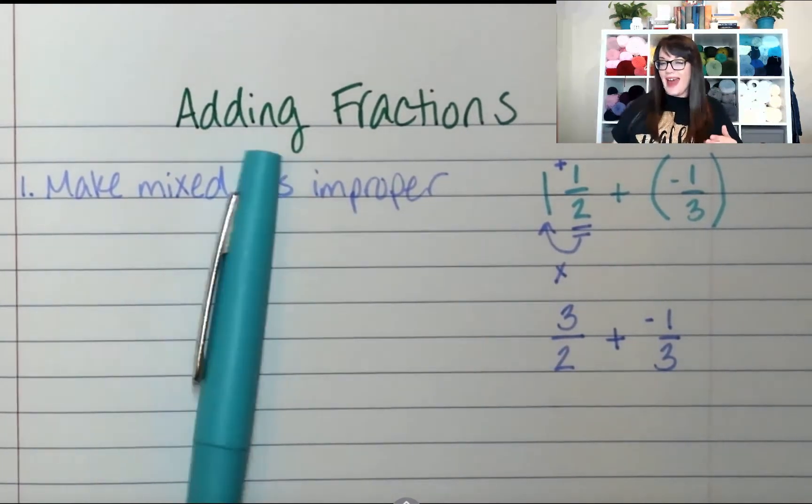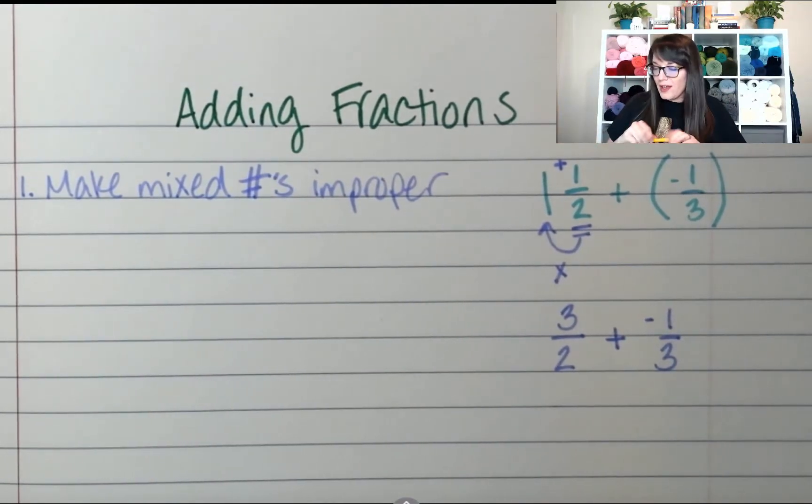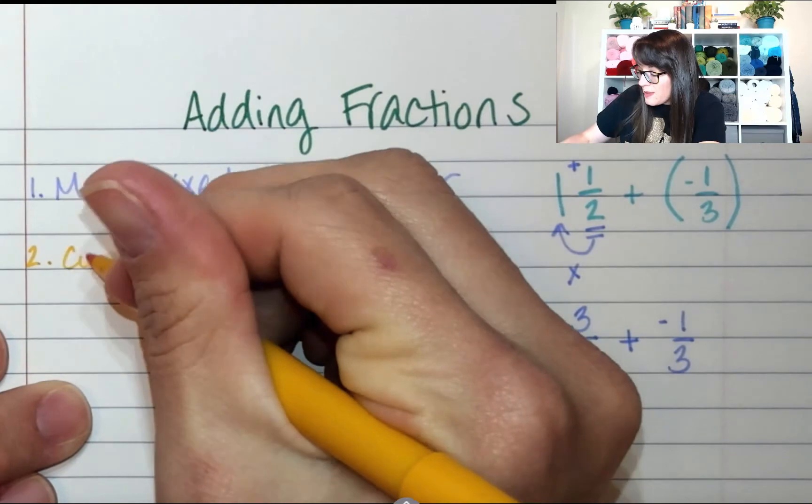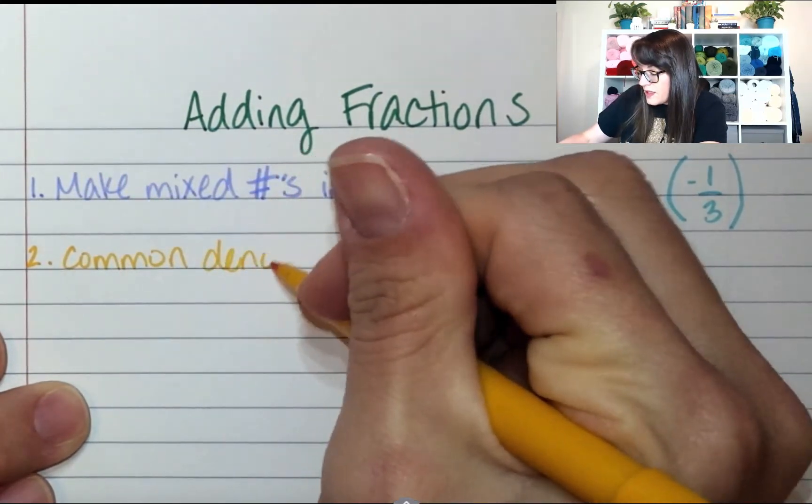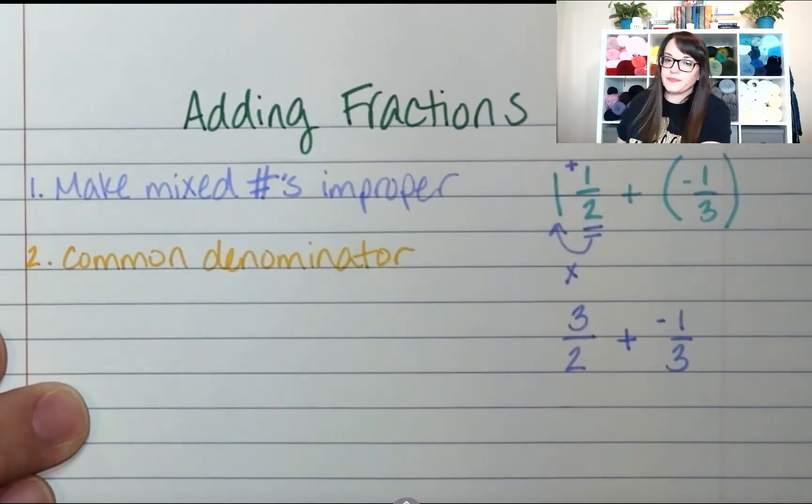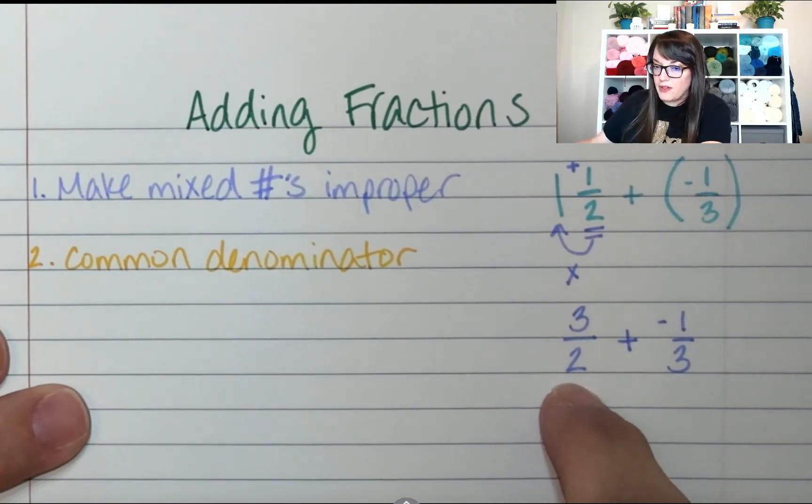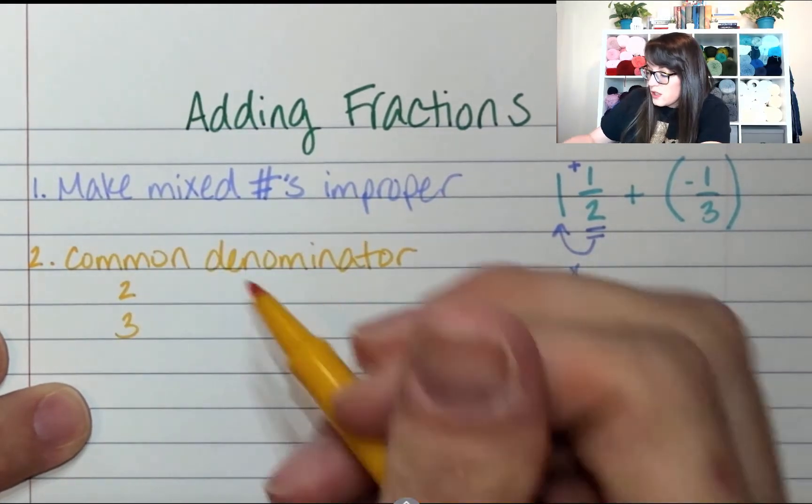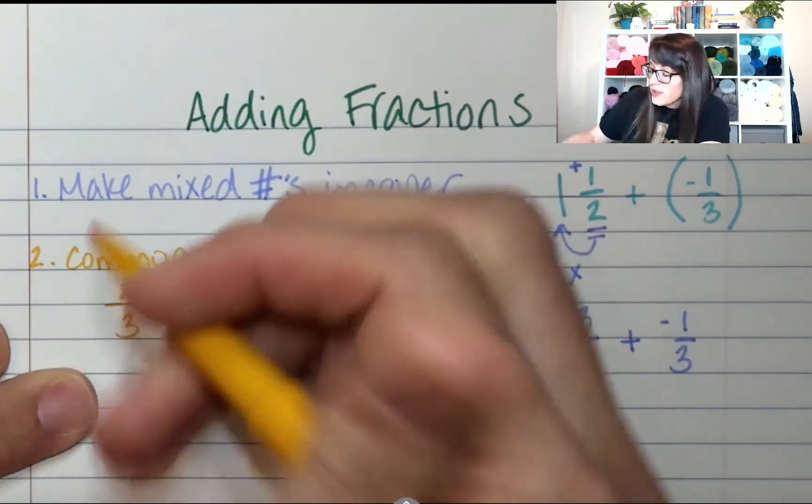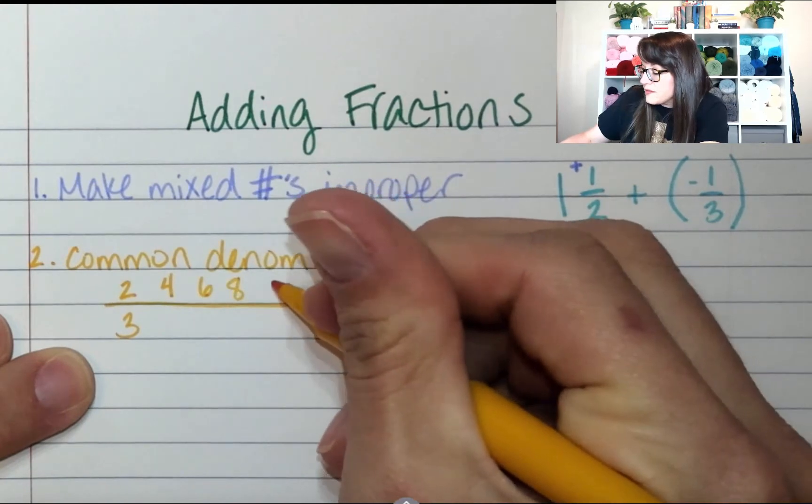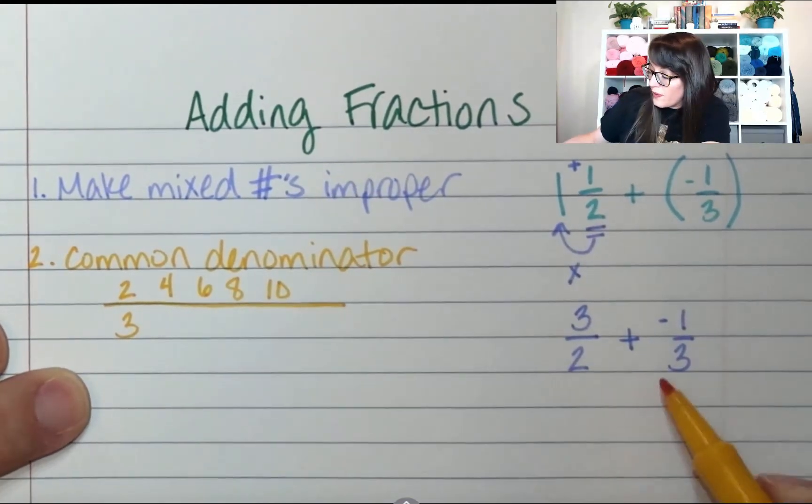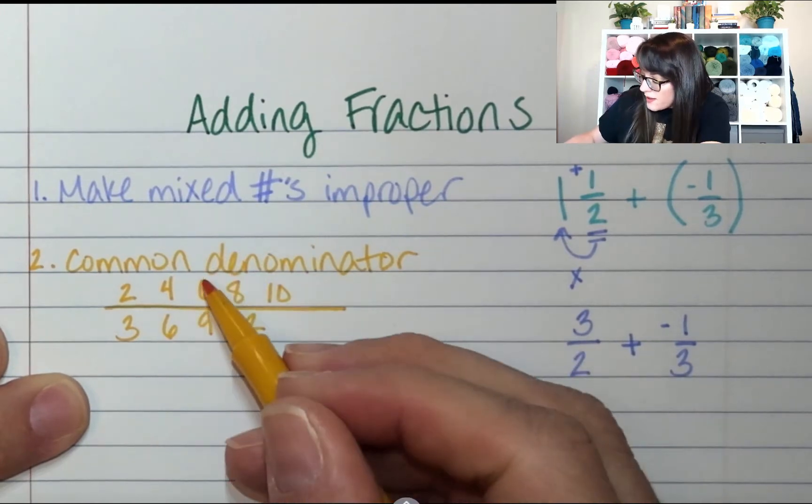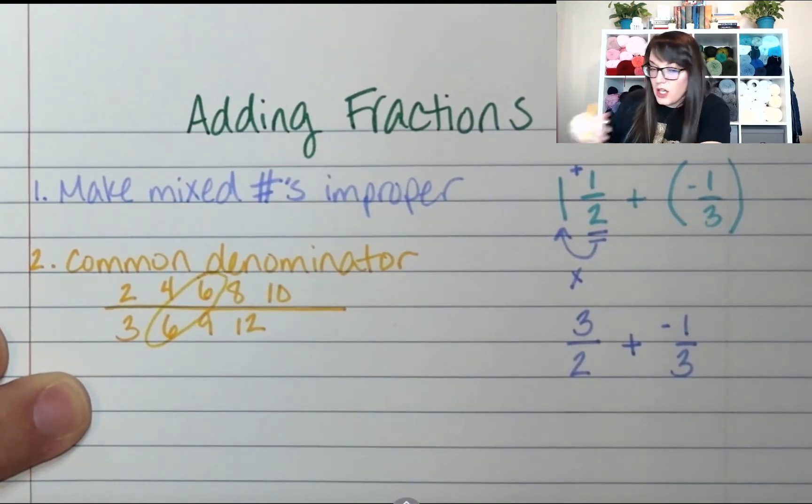The next rule, when we're adding fractions, you have to have a common denominator. So, my next step is I'm going to find a common denominator. An easy way to do that is to count by the denominators. So, if I count it by twos, and I count it by threes. Two, four, six, eight, ten, and so on. And then threes. Three, six, nine, twelve. Oh wait, stop. I see sixes. Both two and three can go to six.